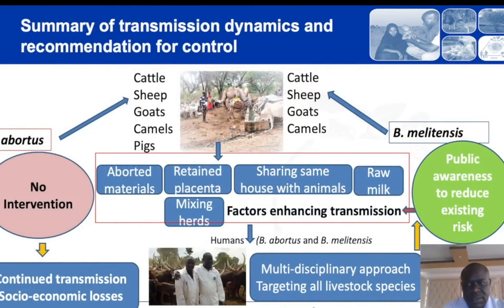So in summary, we found zoonotic species of Brucella circulating in the different animal species, suggesting that all these animals would be playing a role in transmitting Brucella to humans.